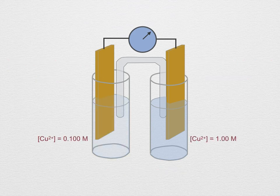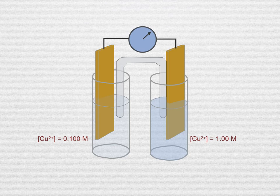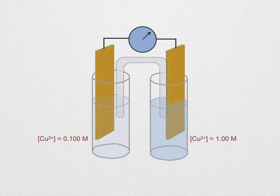But what would happen if the concentration of the copper 2 plus ion in the left hand cell were lowered to 0.1 molar? The system is no longer in equilibrium. Think of what Le Chatelier would say about this. The system will try to return to equilibrium and it can do that by lowering the concentration of copper 2 plus in the higher concentration, the right hand cell, and raising the concentration in the lower concentration, the left hand cell. How can it do that?